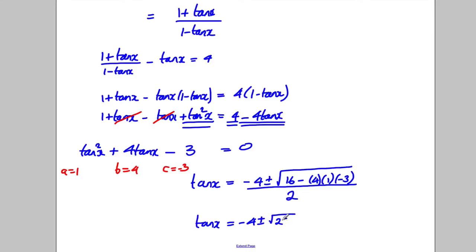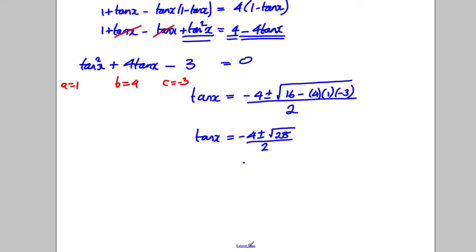So tan X would be negative 4 plus or minus square root of 16 add 12, so that would be the square root of 28 all divided by 2. Tidying this up I could write root 28 as root 7 root 4 which is 2 root 7, so 2 root 7 over 2, that's going to be negative 2 plus or minus root 7.